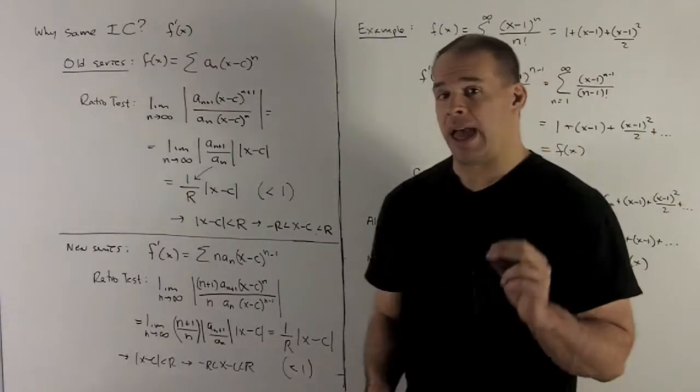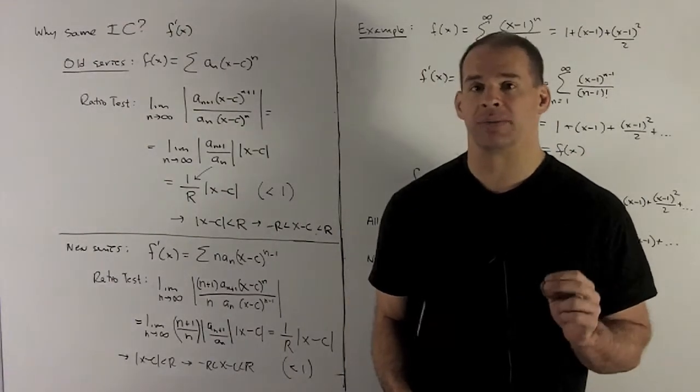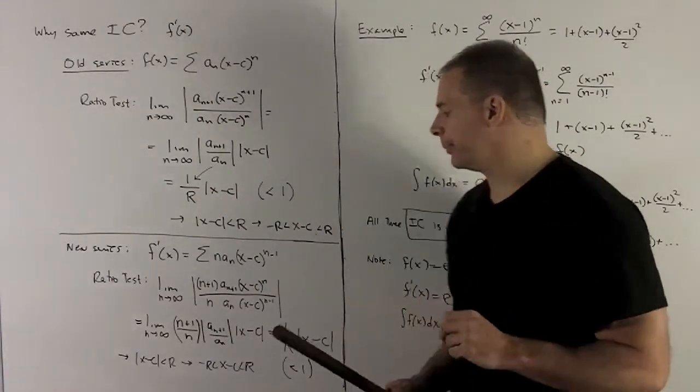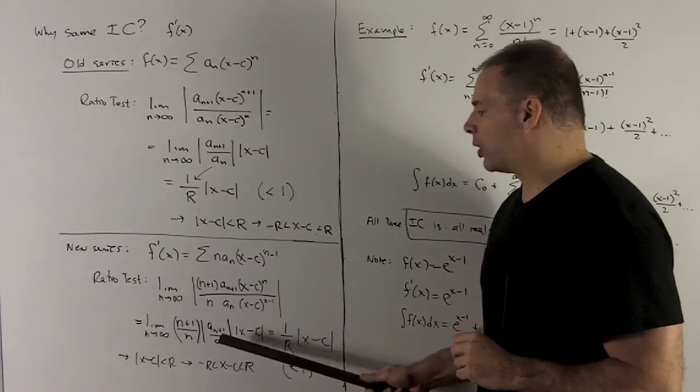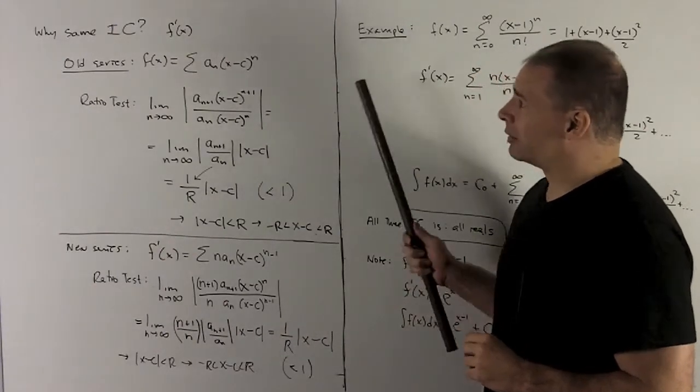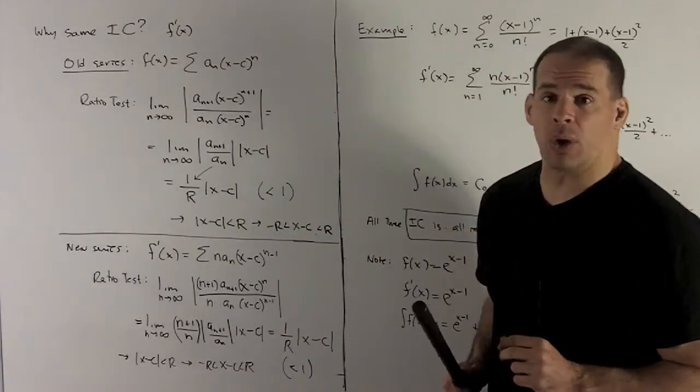What happens in the first term? (n+1)/n, as n goes to infinity, that's going to go to 1.